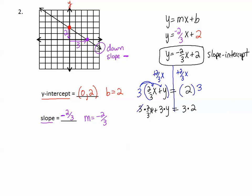The 3's from here cancel out, and we have 2x plus 3y equals 6. And there is the equation in standard form. The x's and y's are on the same side, and I have no fractions.